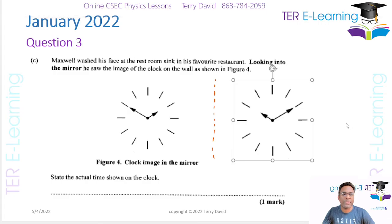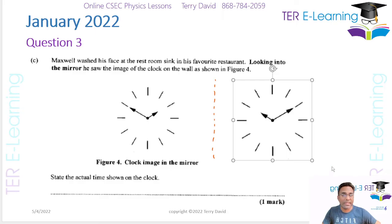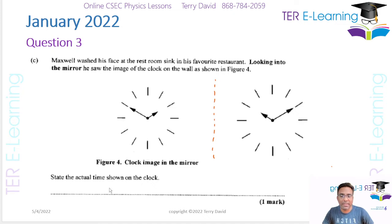The diagram on the right-hand side actually represents the mirror image. The actual time — if you look at that — is 10 past 10. So the answer is 10:10.